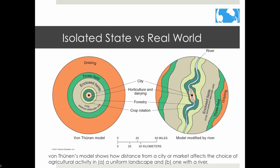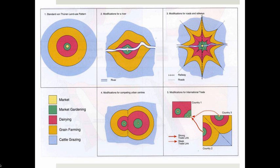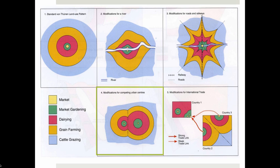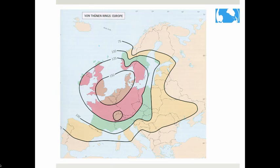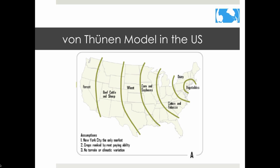Von Thünen's model assumed a flat physical landscape with no features. A diagram from the textbook shows how a river might change the model — the general pattern is still there, but it doesn't look like neat concentric rings. Other factors that can modify the model include roads, competing cities, and international trade. A diagram showing Sydney, Australia demonstrates what the model predicts versus what it really looks like. A map also shows the pattern applied to Europe.